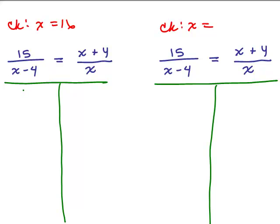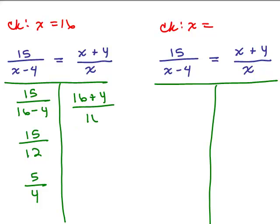We're going to put in 16 for x. So I've got 15 over 16 minus 4, which is 15 twelfths, and then you reduce. Divide the top and bottom by 3—that will be 5 fourths. Now let's do the right-hand side. You're going to put in 16 for x. 16 plus 4 over 16 is 20 sixteenths, and then I need to divide top and bottom by 4, which is 5 fourths. So that checks. So 16 is a solution.